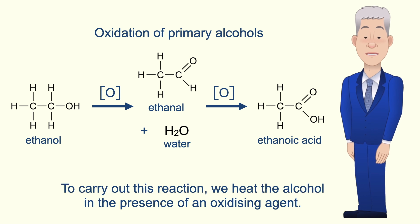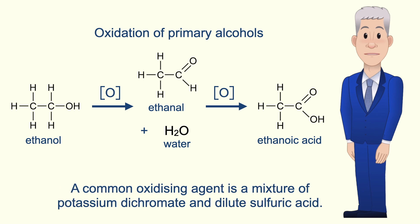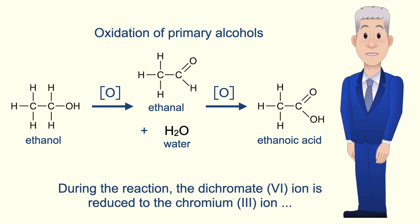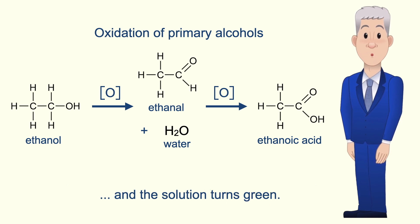To carry out this reaction we heat the alcohol in the presence of an oxidizing agent. A common oxidizing agent is a mixture of potassium dichromate and dilute sulfuric acid. Potassium dichromate has an orange color. During the reaction the dichromate(VI) ion is reduced to the chromium(III) ion and the solution turns green.